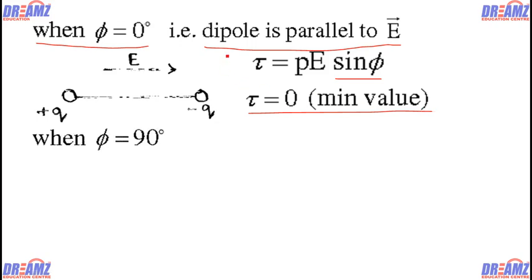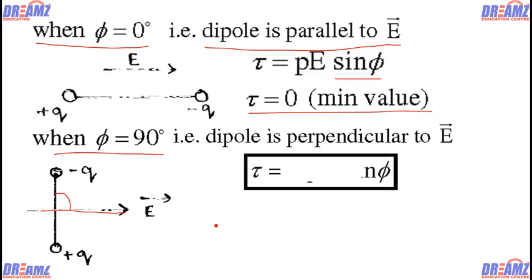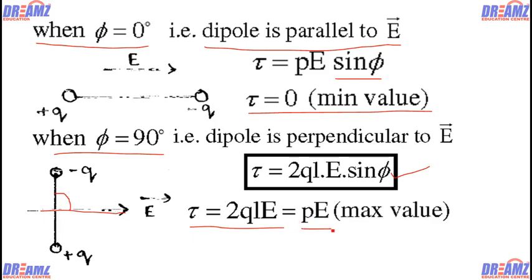Now, if the dipole is placed perpendicularly to the electric field, then phi will be 90 degrees. The dipole is perpendicular to the electric field, so the angle is 90 degrees. Since tau equals pE sine phi and sine 90 equals 1, we can say the torque has a maximum value of 2qlE, or equivalently pE. So the maximum value of torque is pE, achieved when the dipole is placed perpendicular to the electric field, and the minimum value of torque is 0, achieved when the dipole is parallel to the electric field.